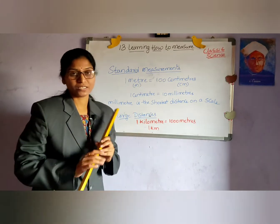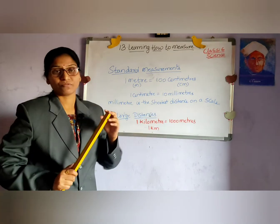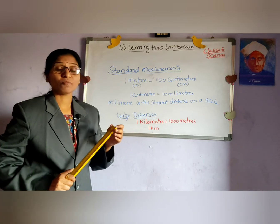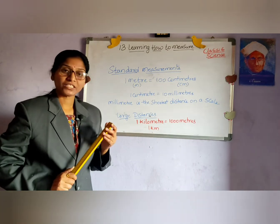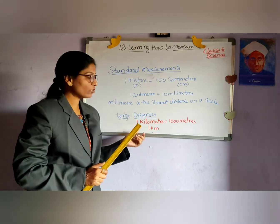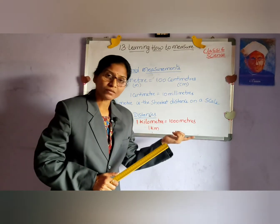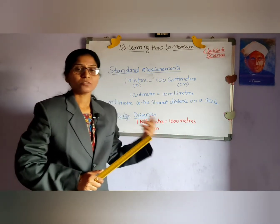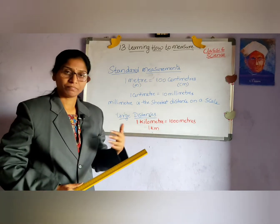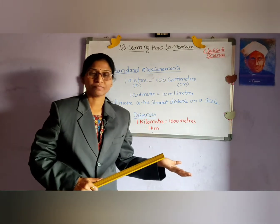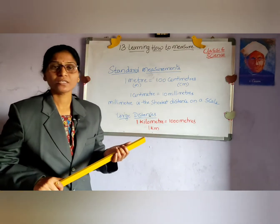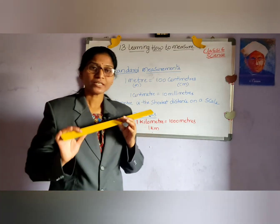For measuring large distances, like the distance from one place to another, we use kilometers. 1 kilometer is equal to 1000 meters. In this manner, we are going to measure different distances, cloth, and different objects by using different measuring instruments.